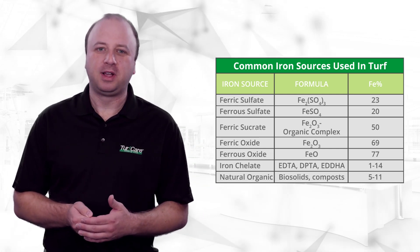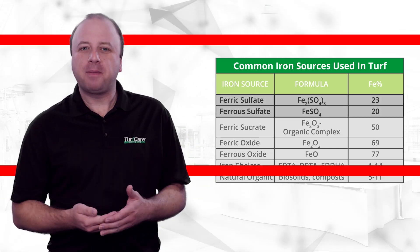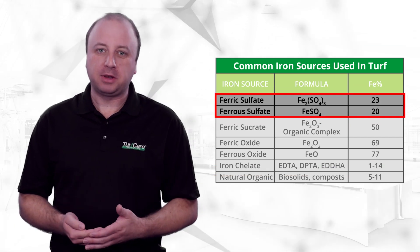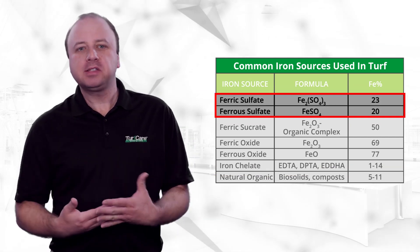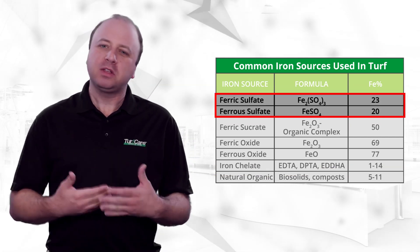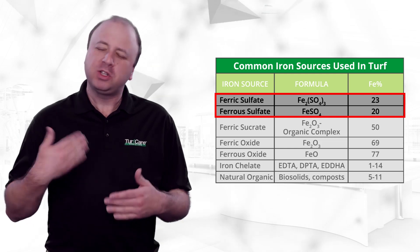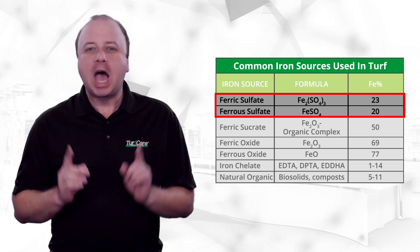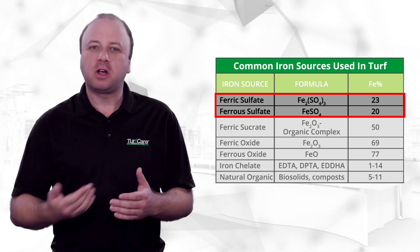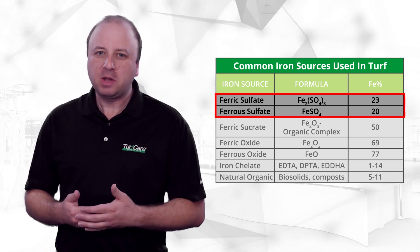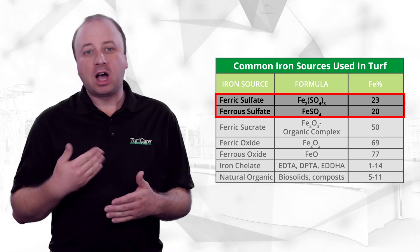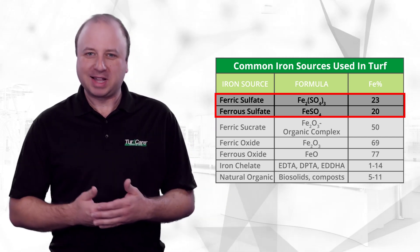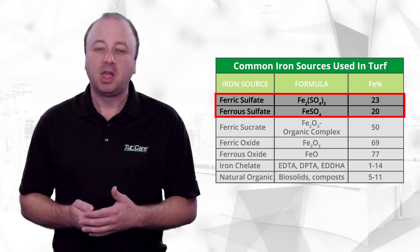At the top we have ferric and ferrous sulfate. Note that these compounds have a relatively low iron content — only 20 to 23 percent by weight. However, sulfates are very soluble, which means the iron is more readily dissolvable in water and available for plants to take up.